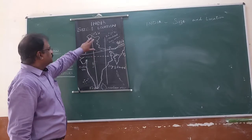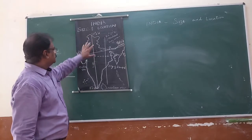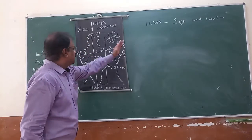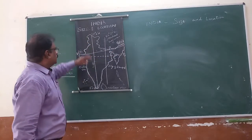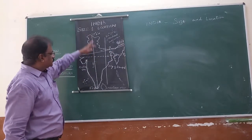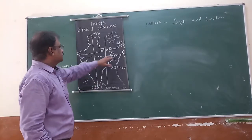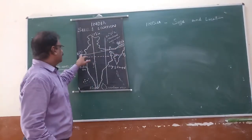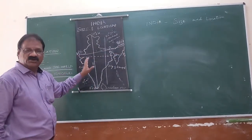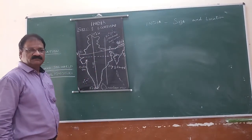82 degree 30 minute east is known as the standard meridian of India, passing through Mirzapur near Allahabad. This is all about the location of India. The latitudinal extent, the longitudinal extent, the north-south extent and the east-west extent of India.